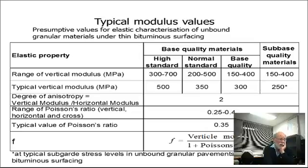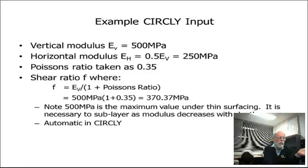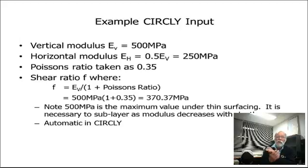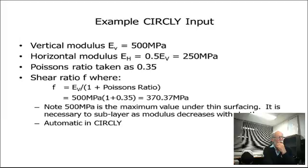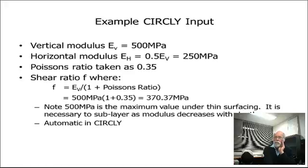There are typical modulus values in Austroads for different quality materials. High quality crushed rock is usually assigned a modulus value of 500 MPa. In a CIRCLY input, you need to put in the vertical modulus, horizontal modulus — in CIRCLY 6 this is automated as half the vertical — and the Poisson's ratio. Then you determine the shear ratio value F, which equals the vertical modulus multiplied by (1 + 0.35), and that's input into CIRCLY.